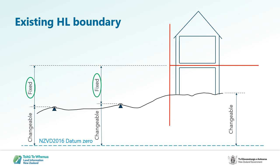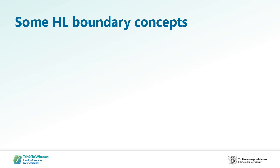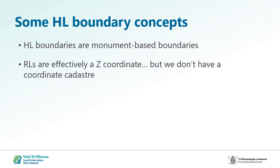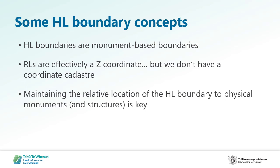So when this height limited boundary is being resurveyed, the physical relationship between the marks and the boundaries needs to stay the same, regardless of what the actual RL is. Height limited boundaries are monument-based boundaries — they are defined and witnessed by physical monuments in the same way as horizontal boundaries. Hence the rules require two PRMs to have levels so that monuments are placed in the vicinity of the boundaries. We describe height limited boundaries with RLs, but RLs are effectively just a Z coordinate, and we don't operate a coordinate cadastre. Maintaining the relative location of the height limited boundary to physical monuments and structures is key.